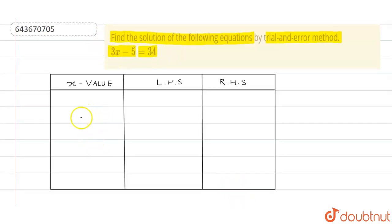Now this is our trial and error method table. We need to put the value of x to make the LHS and RHS equal.